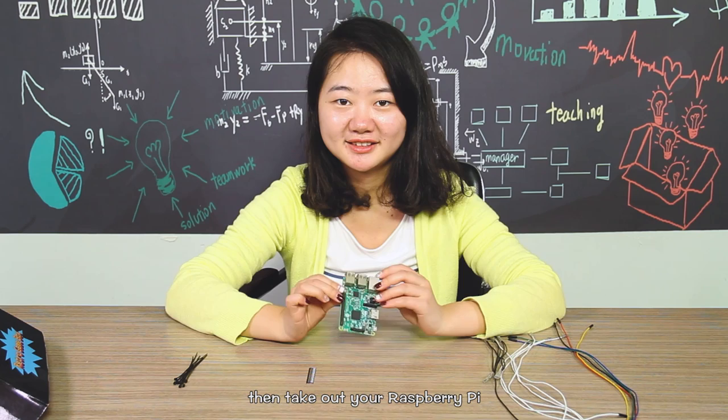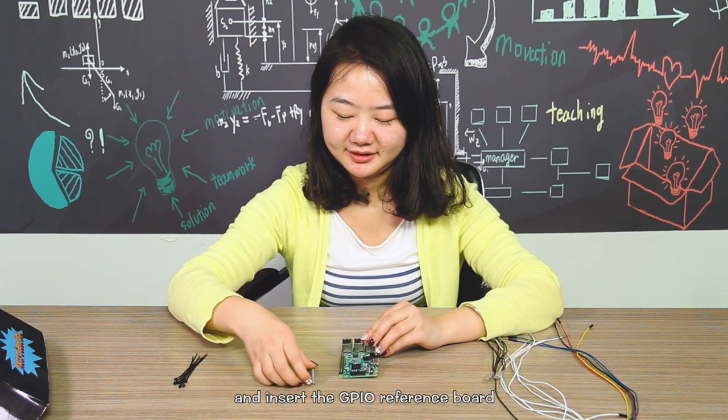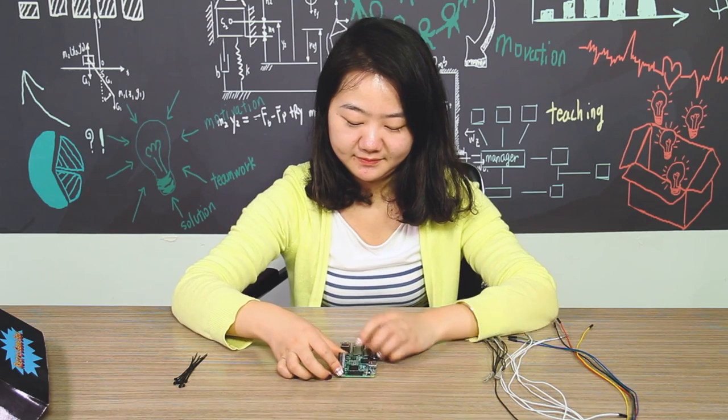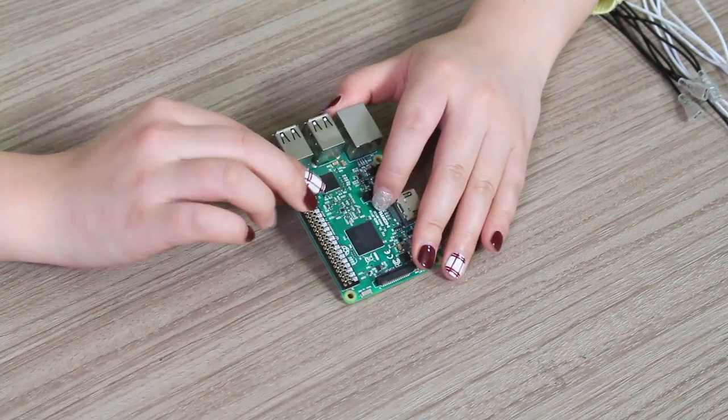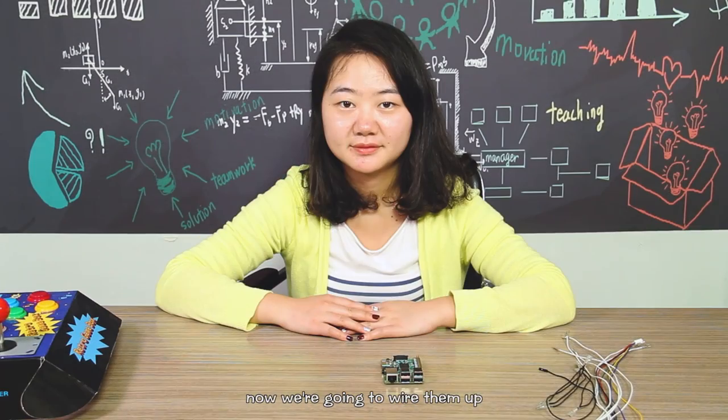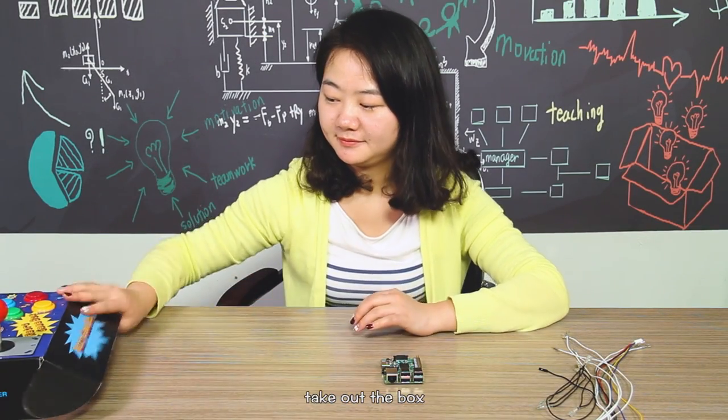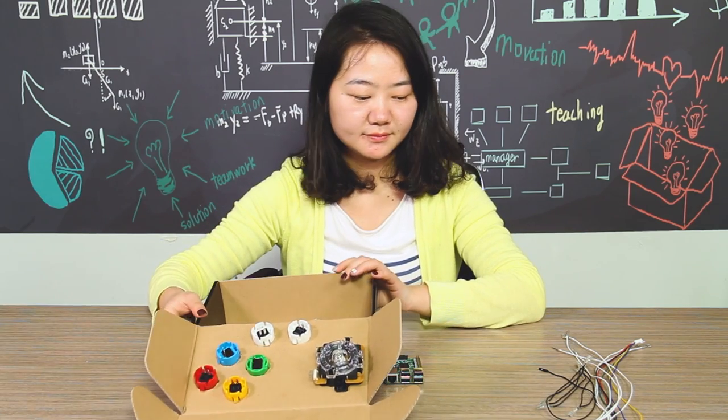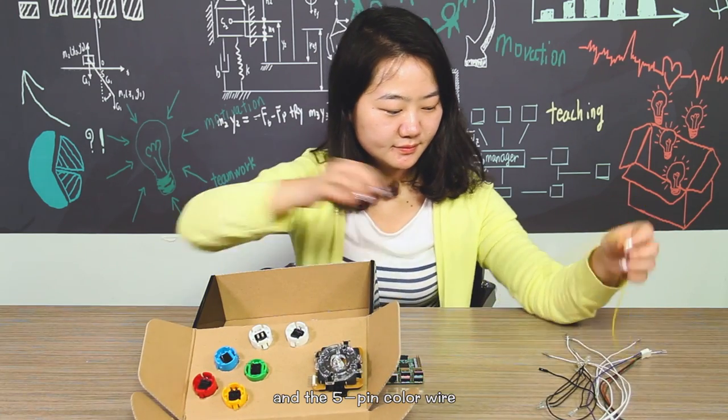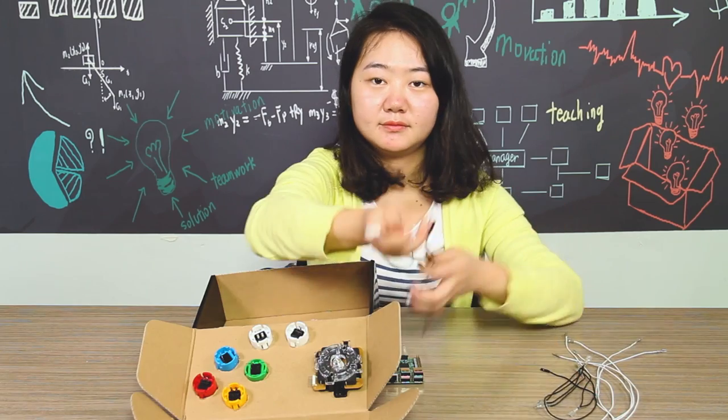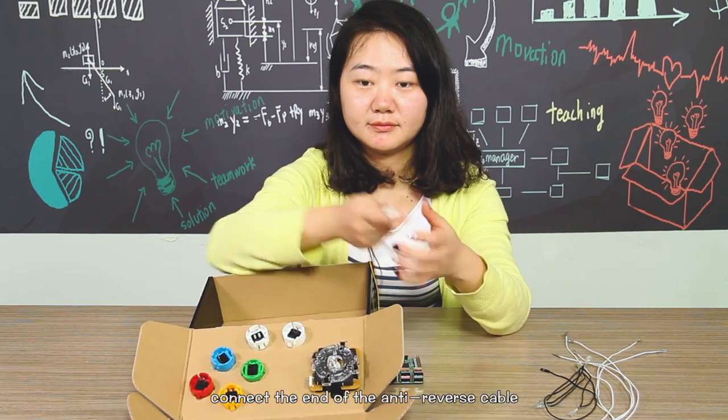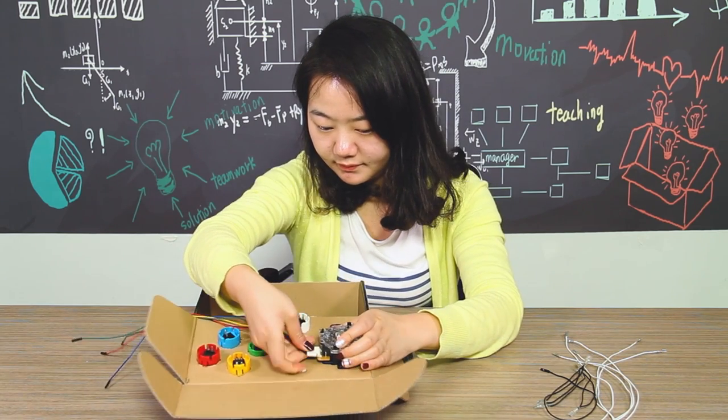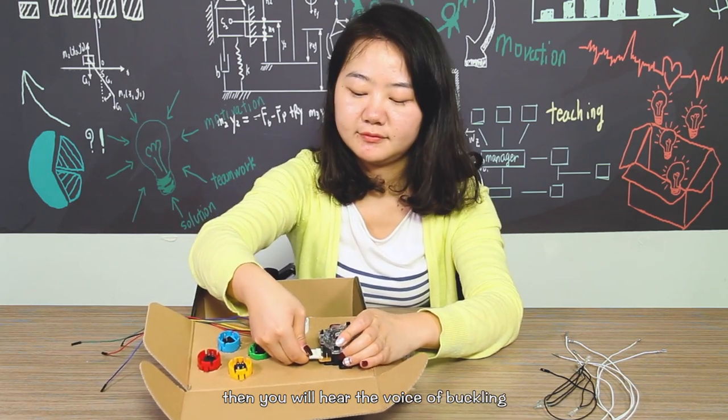Then take out the Raspberry Pi and insert the GPIO reference board into the pins of it. Now we are going to wire them up. Take out the box and the 5-pin color wire. Connect the end of the anti-reverse cable to the white part of the joystick. Then you will hear the voice of it clicking in.